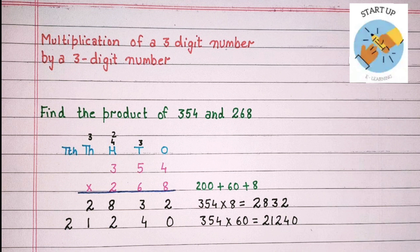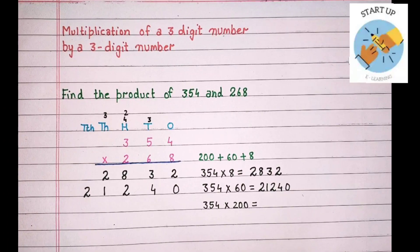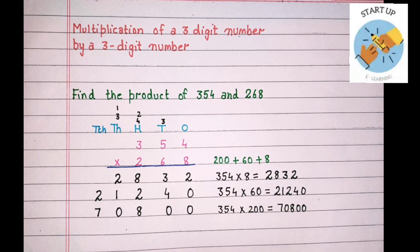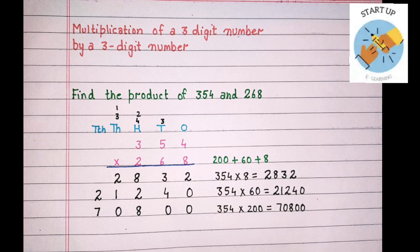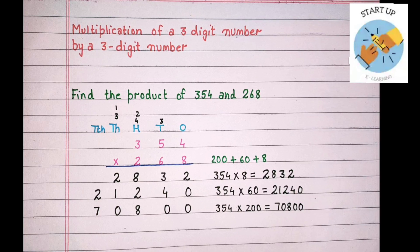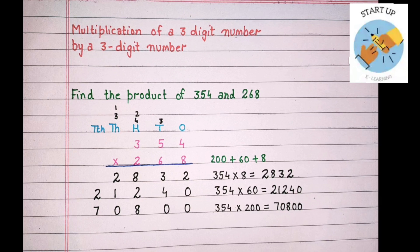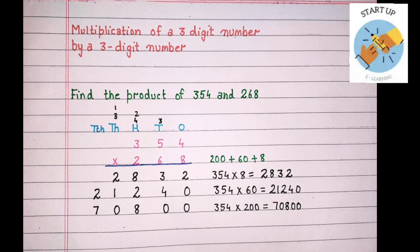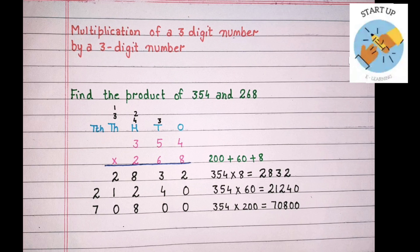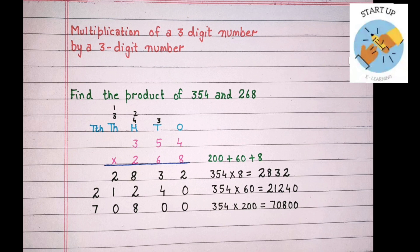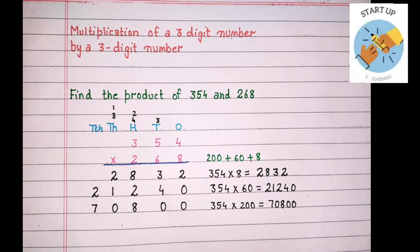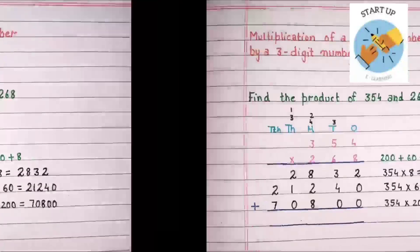Now let's multiply 354 by 200. Because we are multiplying the multiplicand by the hundreds place, we will write zeros at the ones and tens places. Now 2 will be multiplied by the digit at the ones place first: 2 fours are 8. 8 will be written at the hundreds place. Now 2 fives are 10: 0 will be written under the thousands place and 1 will be carried on to ten thousands. Now 2 threes are 6, plus 1 carried over, is equal to 7. So by multiplying 354 by 200, we get partial product 3, that is 70,800.